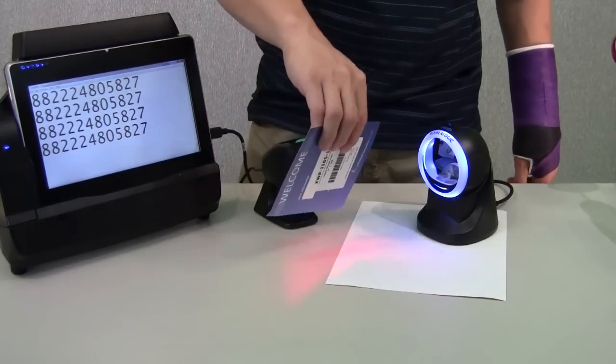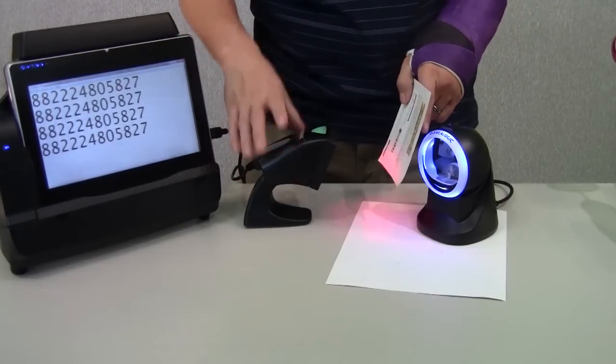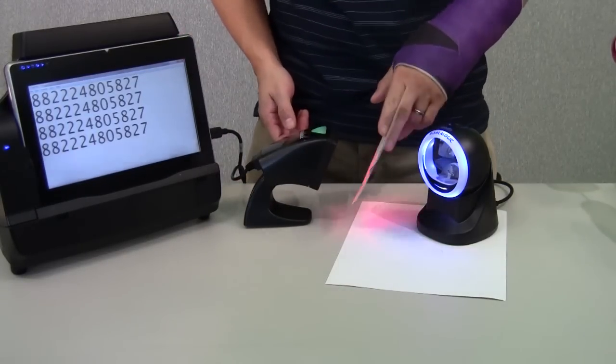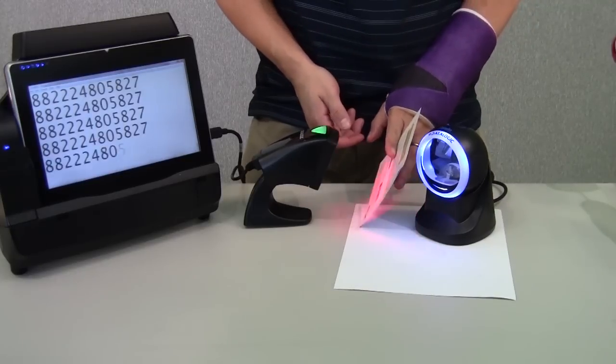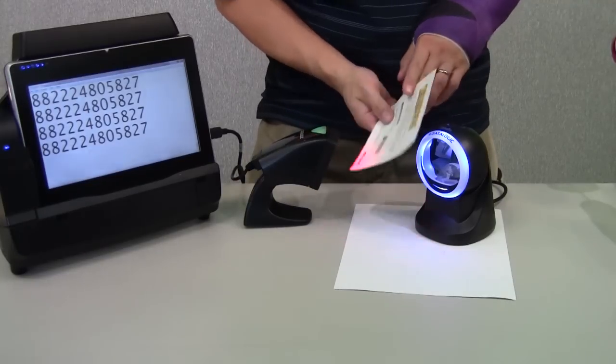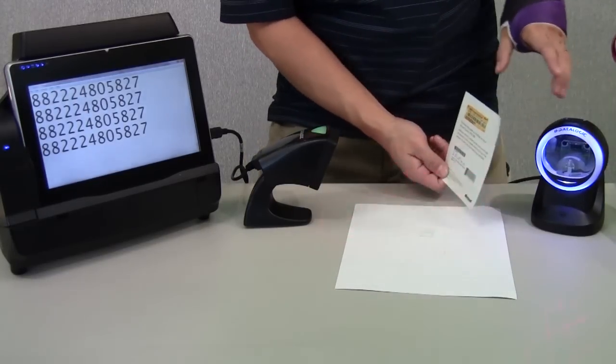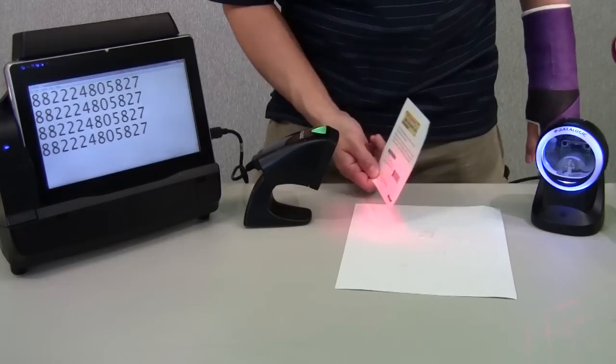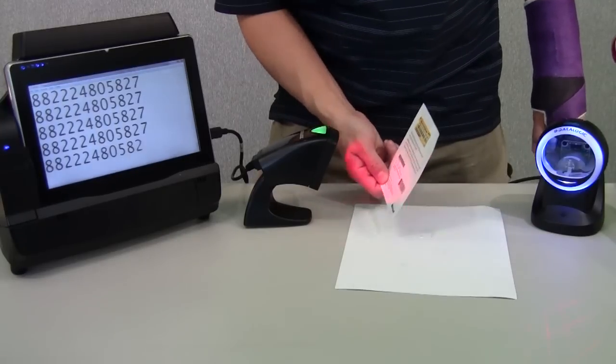The 800i is slightly more forgiving. Because it's an omnidirectional imager, you don't need to twist. You just present the barcode into the light and it scans. Again, you're going to want to play with your depth of field. There's a sweet spot that every scanner has. Once you find that sweet spot, it scans.